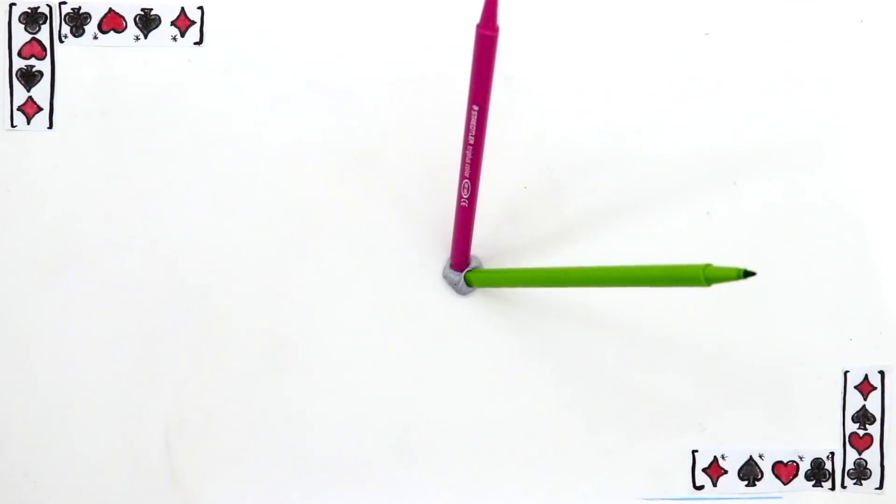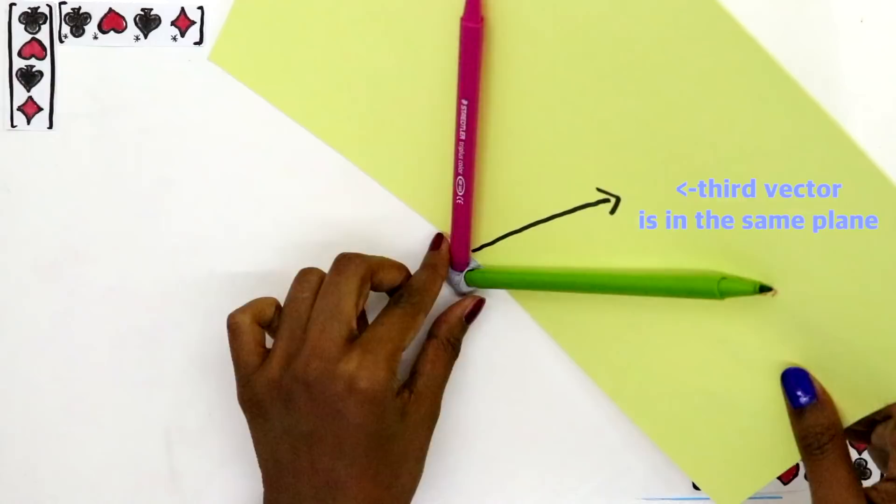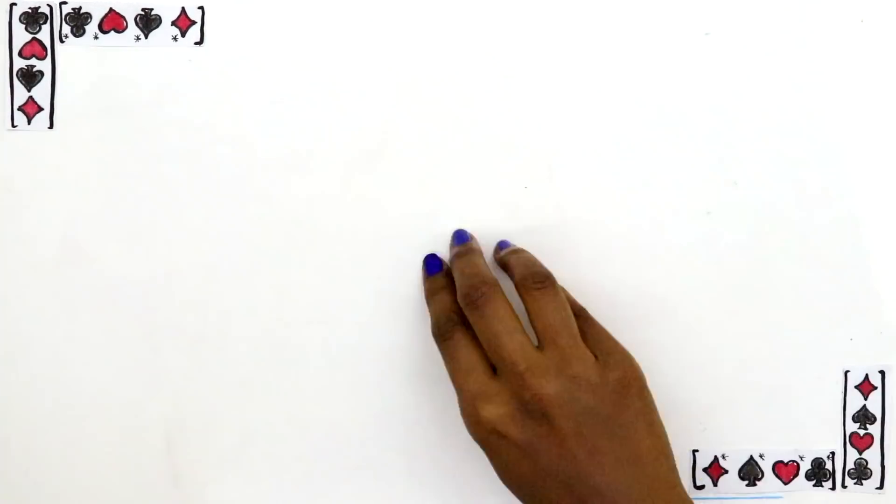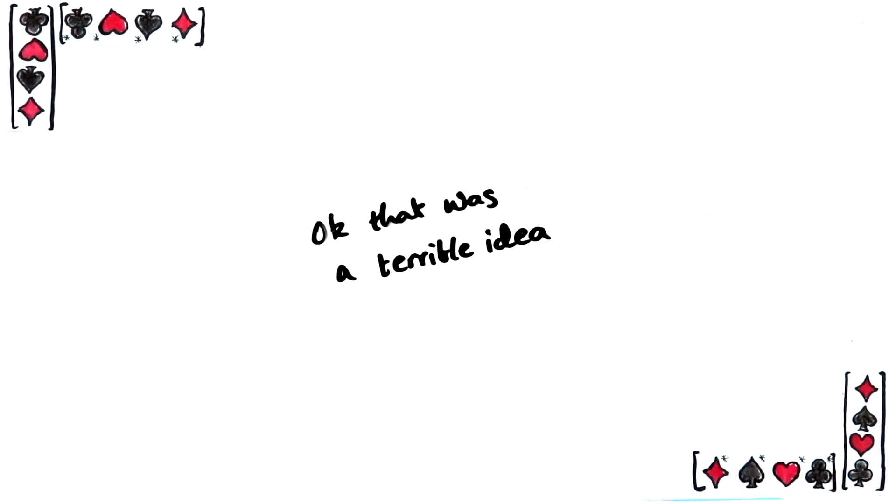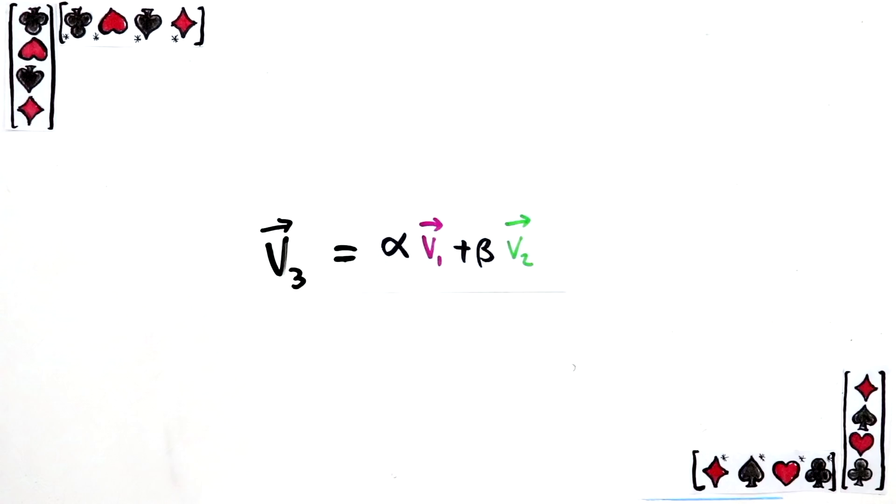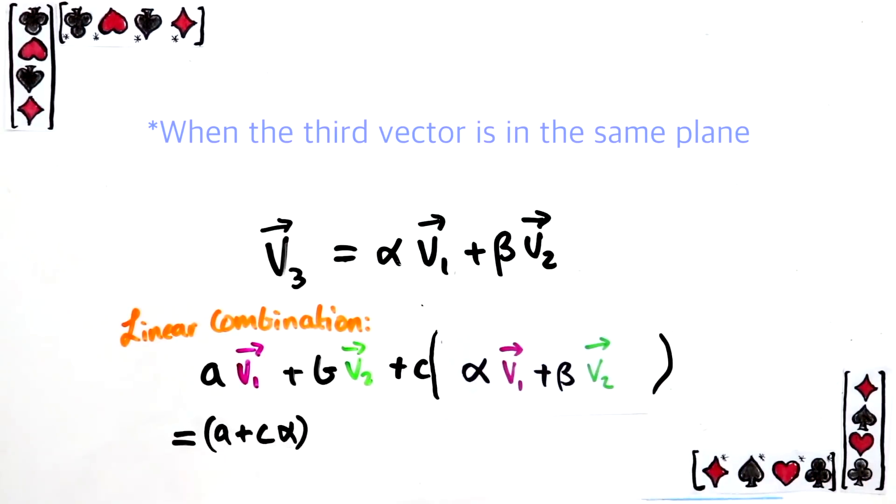So you need a third vector. But what if the third vector was on that same plane? Then clearly it's also redundant. Think of it this way. You can write the third vector as a combination of the other two. So when you have a linear combination of all three vectors, you can just rewrite it as a linear combination of just the two vectors instead. And so the third vector didn't get you anywhere.